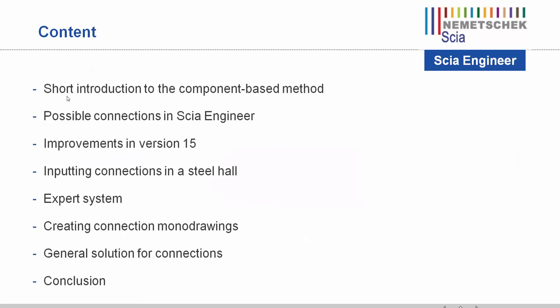Let us first go over the content of this webinar. I will give a short introduction to the component-based method used for calculating connections. Next, I will show the possible connections in SIA Engineer and list some improvements implemented since version 15. After that, some connections will be inputted in SIA Engineer, the expert system will be explained, and the possibilities to create monodrawings of connections will be demonstrated. A general solution will be provided for almost every connection, and finally I will finish with a conclusion.